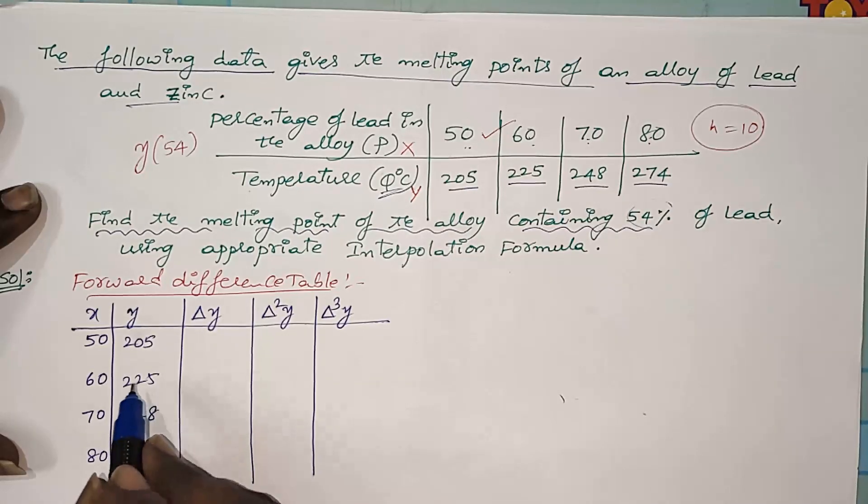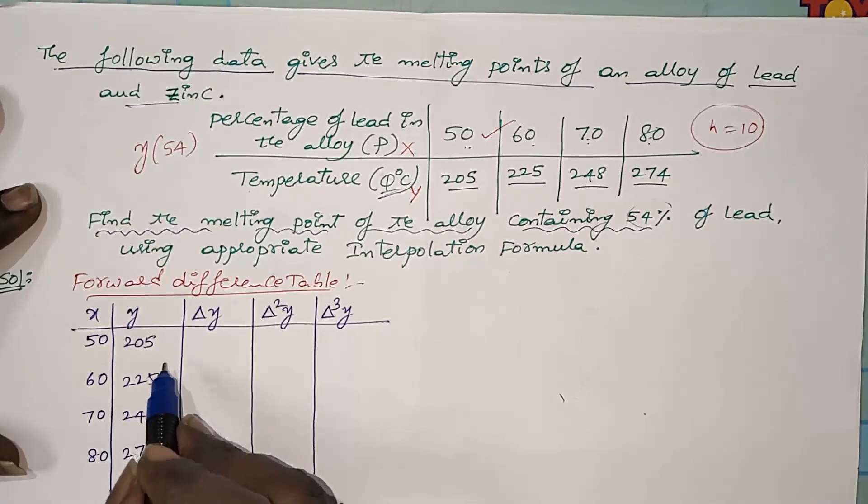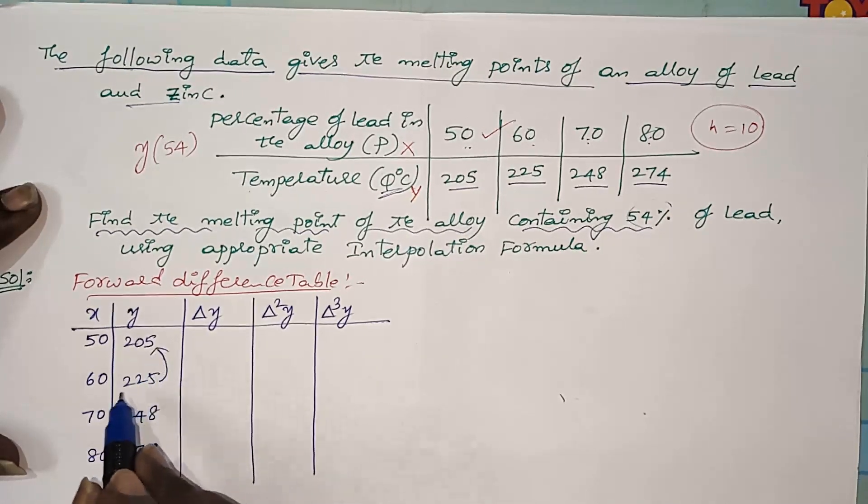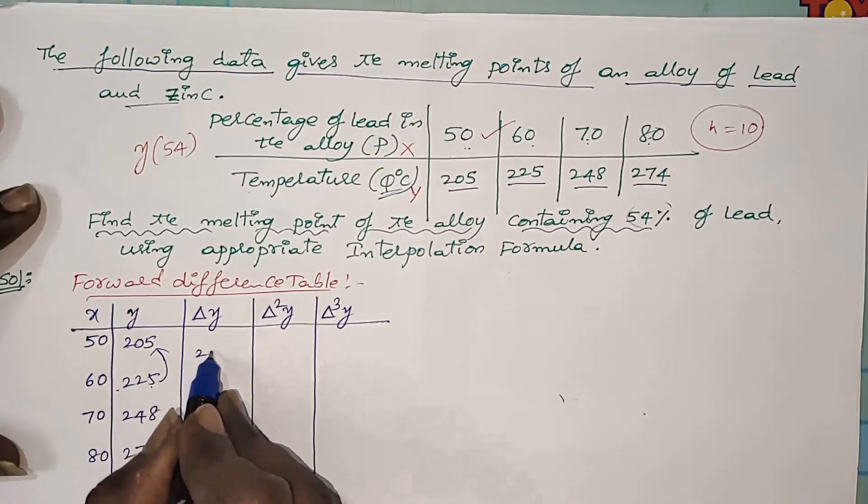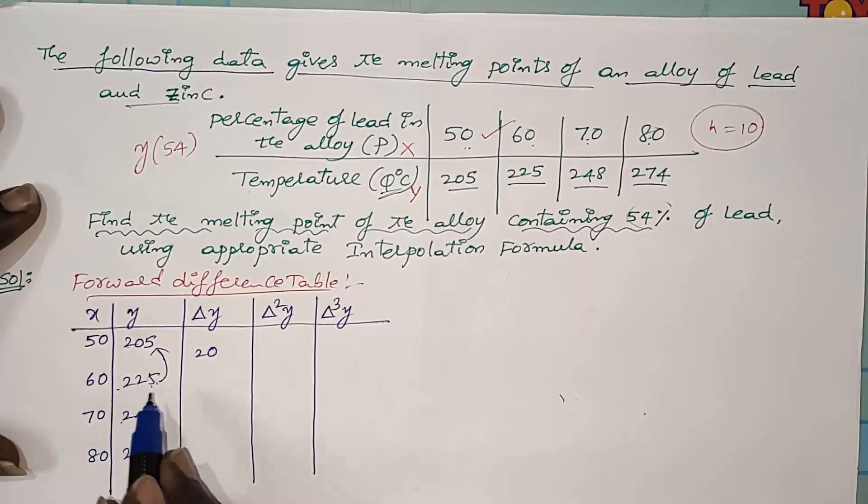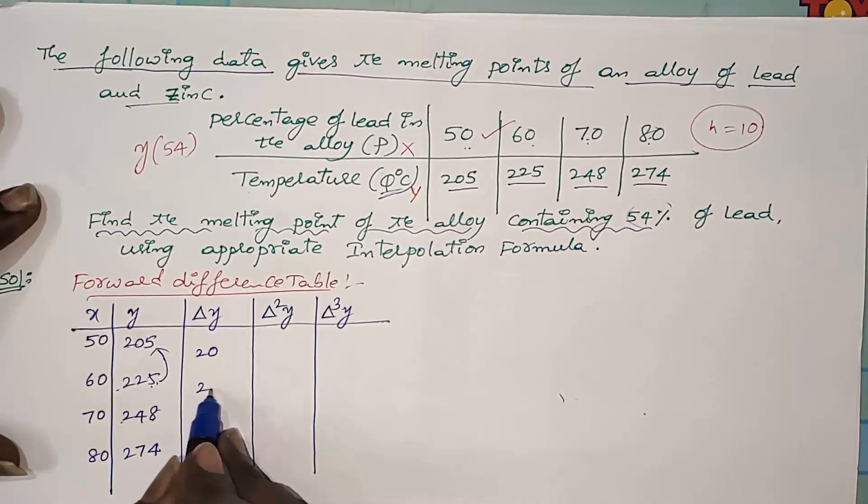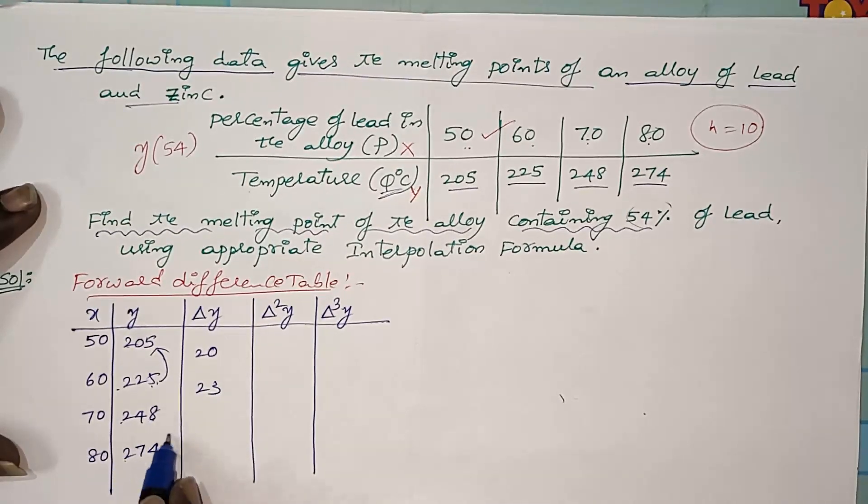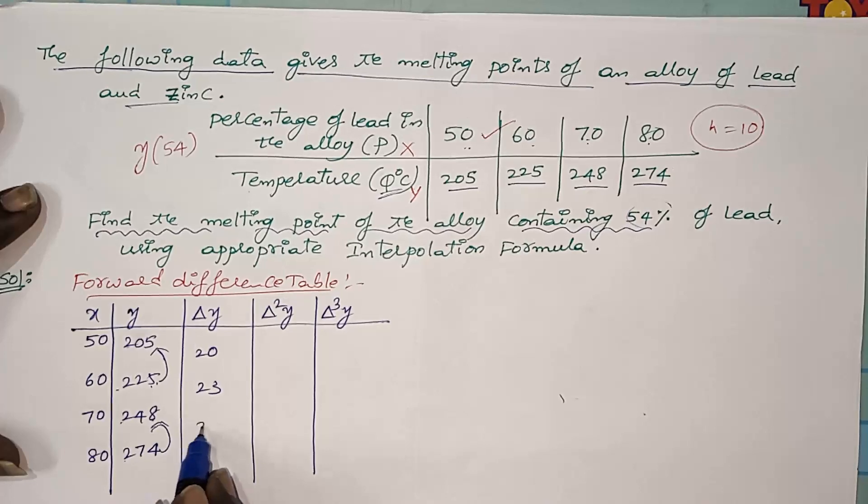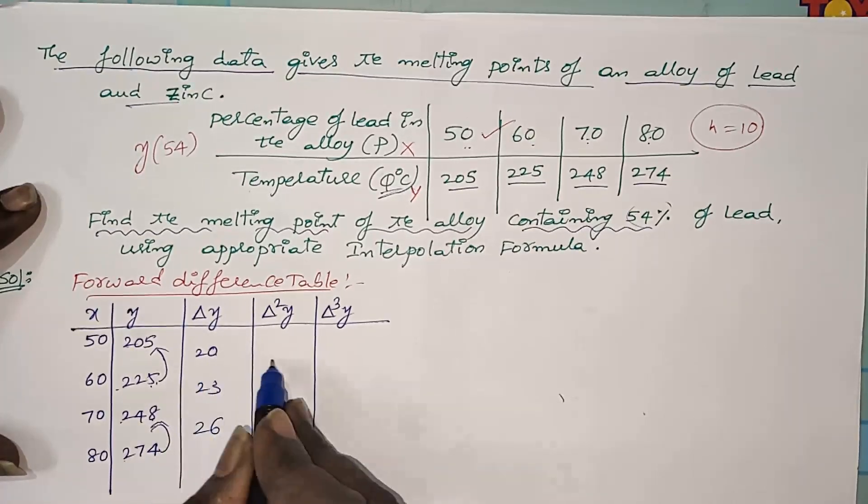Write the differences. 225 minus 205 would be 20 only. 248 minus 225 is 23, and 274 minus 248 would be 26.